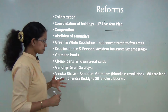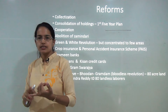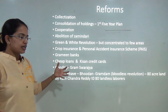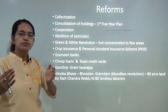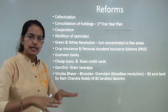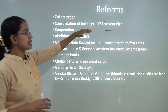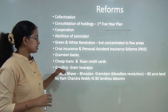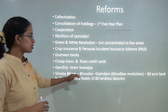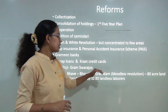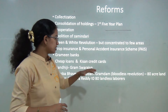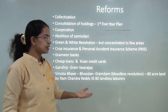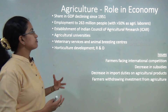There are various reforms in agriculture: insurance and credit card schemes for farmers, white and green revolutions that took place but were concentrated to few areas. Consolidation of land holdings is important because with smaller farms it is difficult to mechanize agriculture — this started with the first five-year plan. Other reforms include cooperative farming, abolition of Zamindari, and establishment of Grameen Banks. Gandhiji talked about Gram Swaraj, and Vinoba Bhave focused on Bhoodan or Gramdan, also known as the bloodless revolution, where Mr. Ramchandra Reddy divided his 80 acres of land among 80 landless laborers.